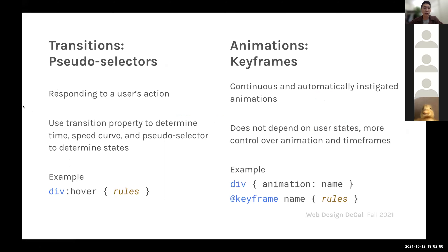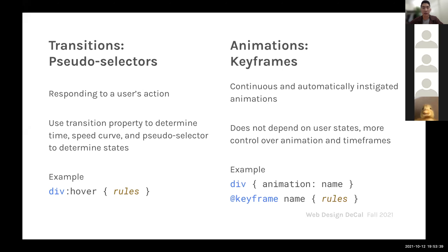As mentioned earlier, there are two different options for making things move on our page purely using CSS. The first is pseudo-selectors — for example, div:hover with some rules, like making an element grow bigger or changing opacity, as we saw in homework assignments. But this responds to a user's actions. Animations, as we saw in a lot of the websites Julia covered, just run on their own. These are continuous, automatically instigated animations that start based on when we load our page and when our delay property tells the animation to start.